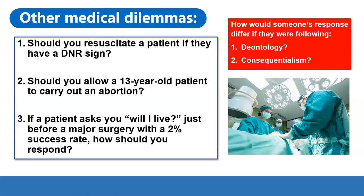On the other hand, a patient might want to know the facts and genuinely whether they will have a chance of living. Telling them it's unlikely could reassure them and help them understand the seriousness and reality of the situation. We can see here that it's not as simple as deontology leading you down one path and consequentialism the other — they can often lead down the same route, and in deontology, a decision may be morally wrong in one sense but doing good for the patient in another.